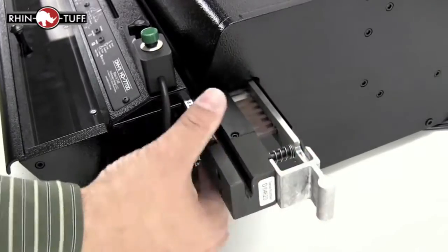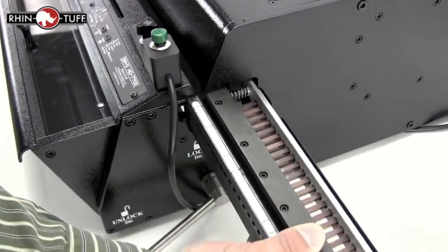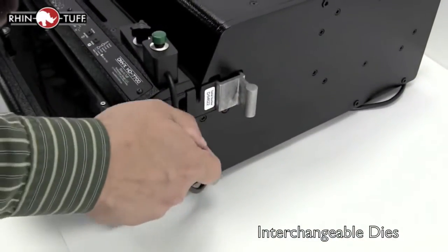One of the greatest features of all RhinoTough Onyx punches is the interchangeable die system. RhinoTough has created more than 20 interchangeable dies that fit in this machine alone and they slide in and out just like you see.